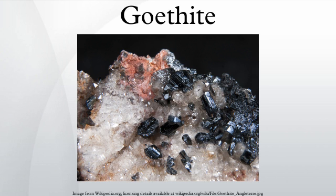Goethite often forms through the weathering of other iron-rich minerals, and thus is a common component of soils, concentrated in laterite soils. The formation of goethite is marked by the oxidation state change of Fe²⁺ to Fe³⁺, which allows for goethite to exist at surface conditions. Because of this oxidation state change, goethite is commonly seen as a pseudomorph.